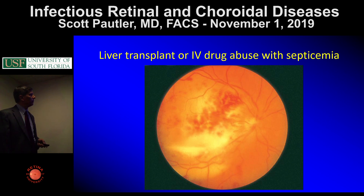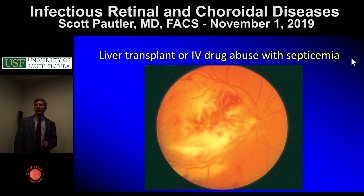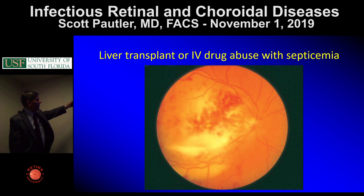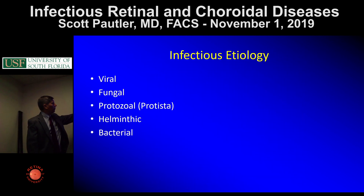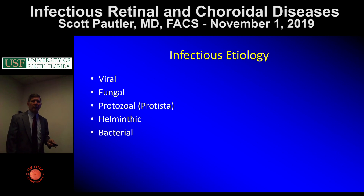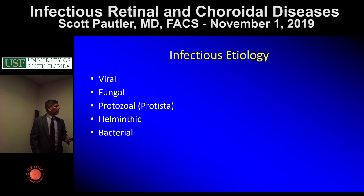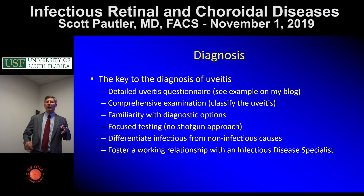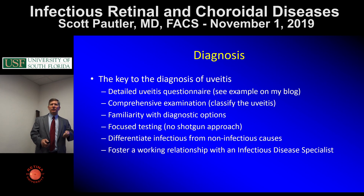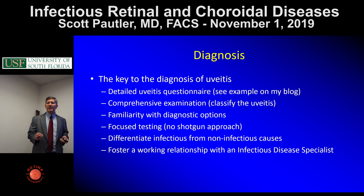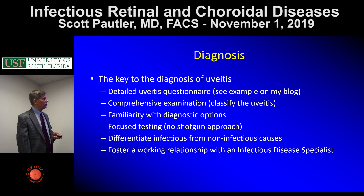So we're going to review infectious etiologies of retinal and choroidal uveitic processes, which cover a variety of organisms. Your book refers to protozoas, which are now under the kingdom of protista. When you have a patient with ocular inflammation, the key to diagnosis is: I walk into the room, realize they have uveitis, and give my printed uveitis questionnaire to get all the detailed information.